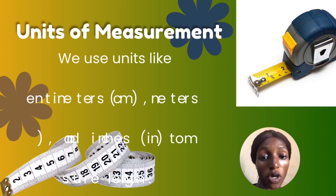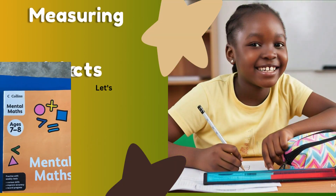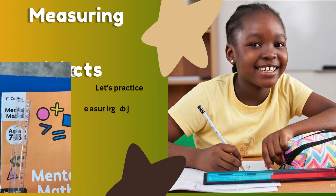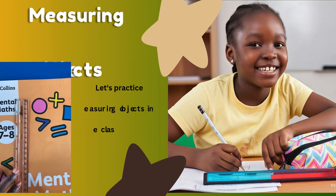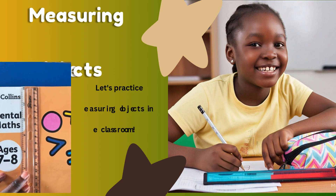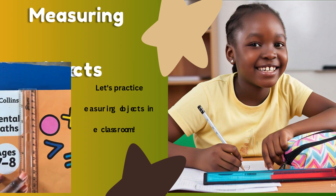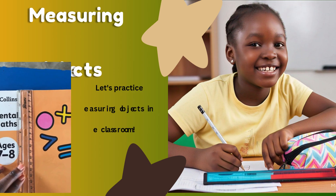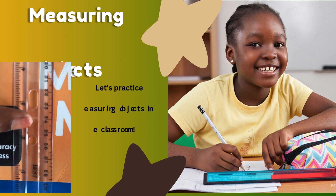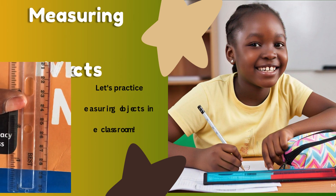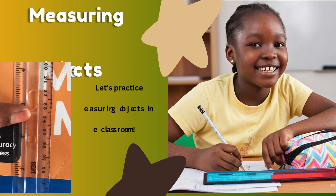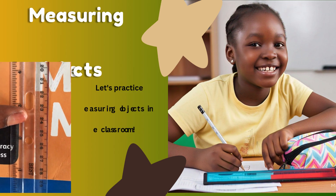It is used to measure length. Now let's measure this book using the ruler — measuring the length from here to here. It stops at about 28.5 centimeters.